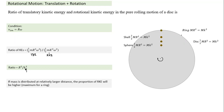If all four shapes — ring, shell, disk, sphere — have the same mass, same radius, and roll with the same velocity, their translational kinetic energies are equal. However, rotational kinetic energy is highest for the ring and least for the sphere, because the ring has more mass distributed farther from the axis. Higher k means higher proportion of rotational kinetic energy.